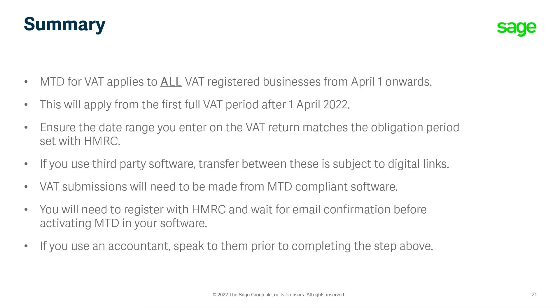To summarise: Making Tax Digital for VAT will apply to all VAT registered businesses from April 1st onwards, including those who have registered voluntarily. It will apply for the first full VAT period after April 1st, 2022. Ensure the date range on the VAT return matches the obligation period set with HMRC, and if you use third party software, transfer between these is subject to digital links. VAT submissions must be made from Making Tax Digital compliance software, and you will need to register with HMRC and wait for email confirmation before activating Making Tax Digital within your software. If you use an accountant, speak to them first before completing any of the steps mentioned in this video. Thank you for watching and good luck on your Making Tax Digital journey.